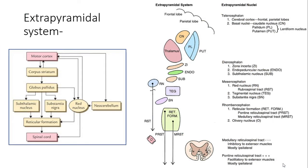Moving on to the extrapyramidal system — this is an older system than the pyramidal and consists of all tracts other than the pyramidal tracts. This flow chart shows how the corpus striatum controls the spinal cord through different pathways like the rubrospinal, vestibulospinal, olivospinal, and reticulospinal tracts. We are going to see each of these tracts of the extrapyramidal system.